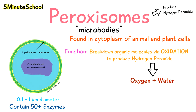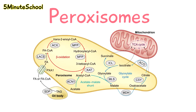The enzymes in peroxisomes break down long chain fatty acids by the process of oxidation. If these long chain fatty acids were left to accumulate, they could start to damage certain structures like the myelin insulation sheath surrounding nerve fibers in the brain. That's why they tend to break them down before they start causing damage.